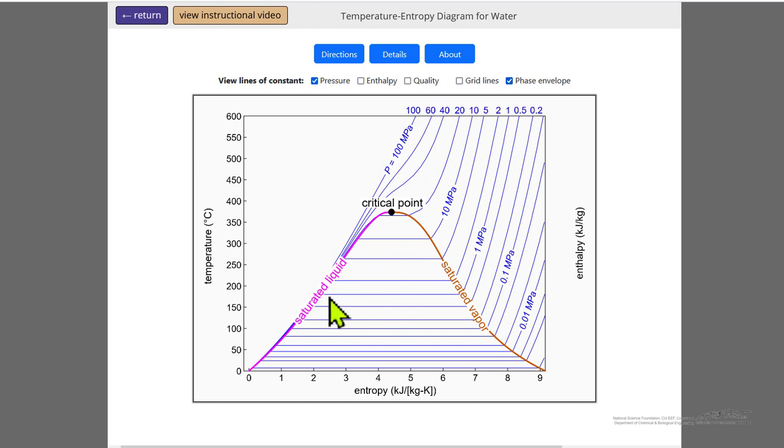The isobars, for example, show that in the two-phase region, constant temperature is also constant pressure, as we know from Antoine's equation—there's one temperature where we have a saturation pressure. In the vapor phase region, at constant pressure, as the entropy increases, the temperature increases, or as the temperature increases, entropy increases, as we know for a gas phase at constant pressure.